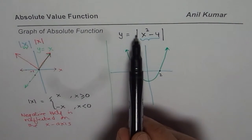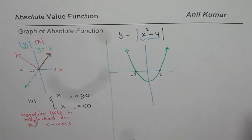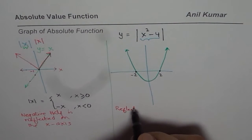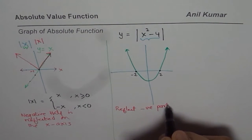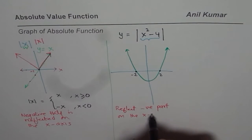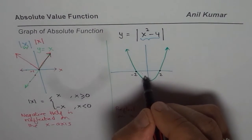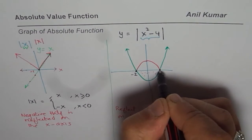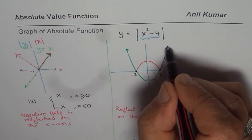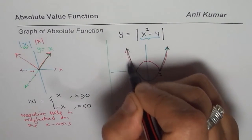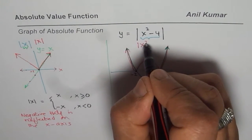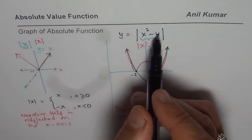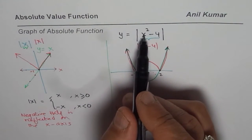Now to sketch the absolute value, we apply our strategy: reflect the negative part on the X-axis and retain the positive part as such. The part of the parabola below the X-axis gets reflected upward. So at X = 0, the original value was -4; when reflected, it becomes +4. That gives us the graph of Y = |X² - 4|.